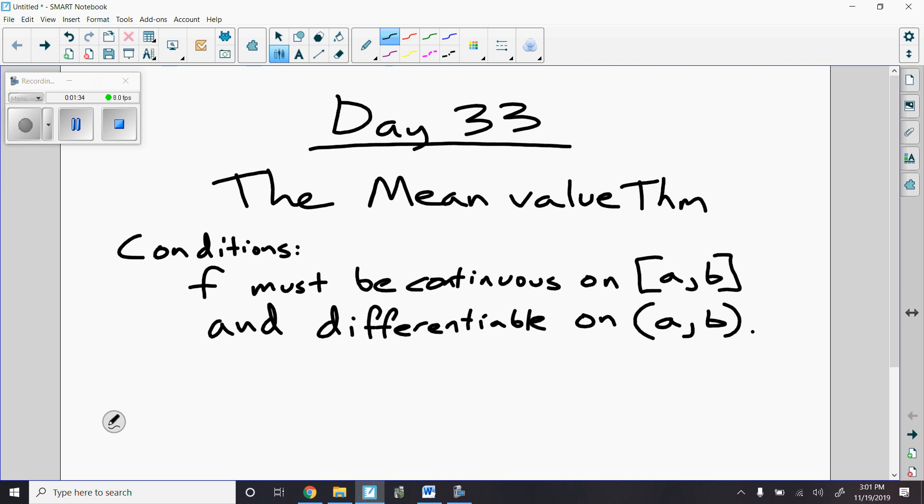By the way, this is one of the most heavily tested theorems based on its conditions. So they really like to dive into the fact that if the conditions aren't right, then we can't use the mean value theorem. So let's talk about if those conditions are met. Then basically what we have is somewhere between A and B, we'll call it point C. Somewhere in between F prime of C must equal the average rate of change of F on A, B.